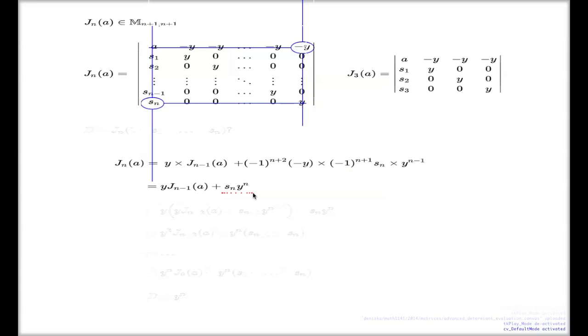If you now unravel your recurrence relation all the way to the very first determinant - so if you start doing something like this, you replace your J n minus 1 with another instance of the recurrence relation. Here's my replacement. So I replace my J n minus 1 with a similar recurrence relation but for n minus 1.